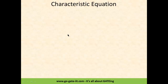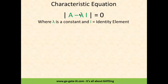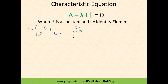The characteristic equation is denoted by the notation A minus lambda I, where lambda is a constant and I is the identity element. The identity element for a 2x2 matrix is [1,0; 0,1]. Likewise, the 3x3 identity matrix is [1,0,0; 0,1,0; 0,0,1].